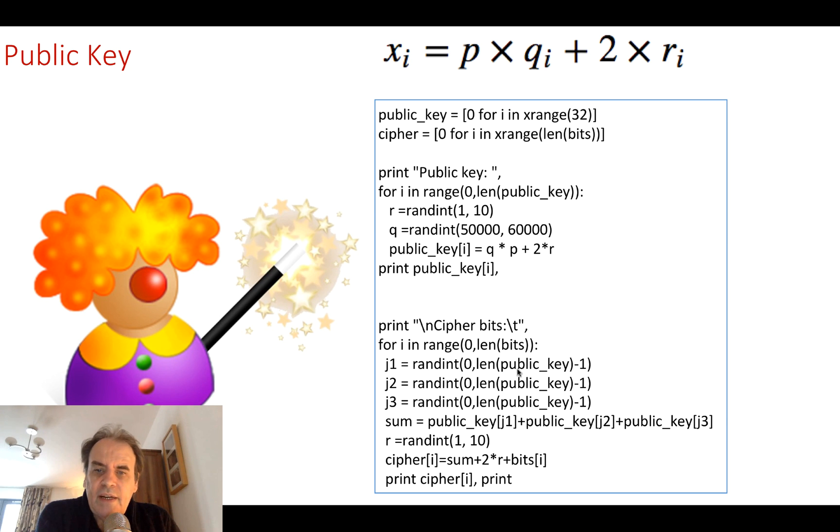To cipher the bits, what we do is we'll take a random sample from the public key to be able to cipher them. So in this case here, I'm generating three random numbers, and then I'm picking off the values from the public key that we generated here. And then I'm going to add them all together.